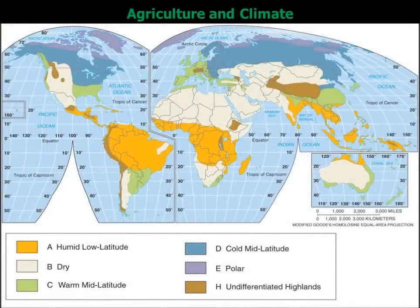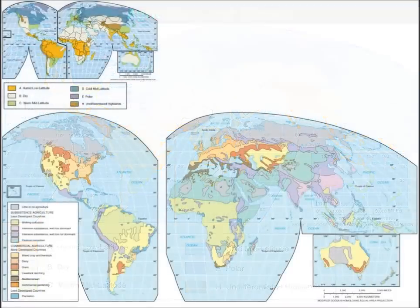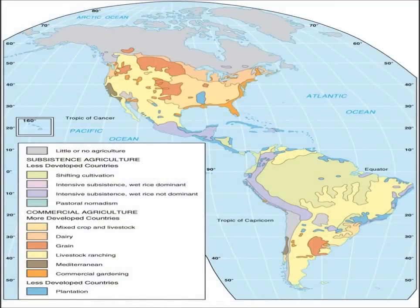When we start to look at domesticating crops, plants, and agriculture — the earliest form — we go back about 10,000 years ago, and the key place or hearth would be Asia. More specifically, we can see the role of seed agriculture coming from Southwest Asia. Seed agriculture — Southwest Asia.